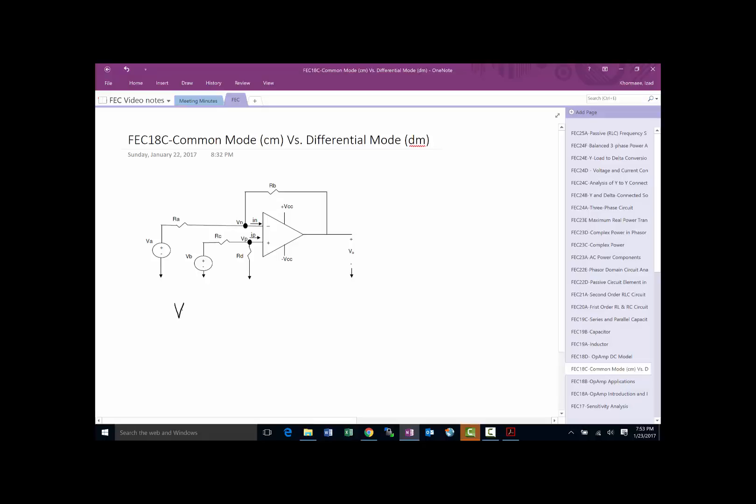We're going to define a voltage which is the difference between the two inputs. So VB minus VA - VB is the one that comes into the positive side, VA comes into the negative side. We're going to do a subtraction of those two and refer to this as differential mode, the VDM voltage.